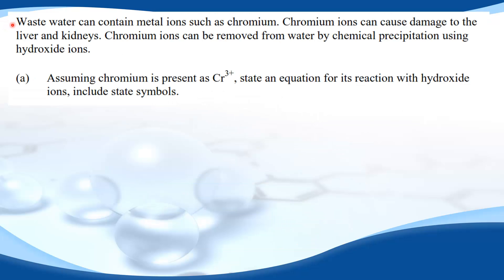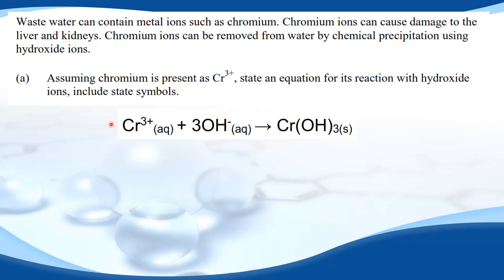Next we will try some examples. Wastewater can contain metal ions such as chromium. Chromium ions can cause damage to the liver and kidneys. Chromium ions can be removed from water by chemical precipitation using hydroxide ions. Part A of the question: assuming chromium is present as Cr³⁺, state an equation for its reaction with hydroxide ions including state symbols. Here is the equation: chromium ions react with hydroxide ions to form chromium hydroxide.